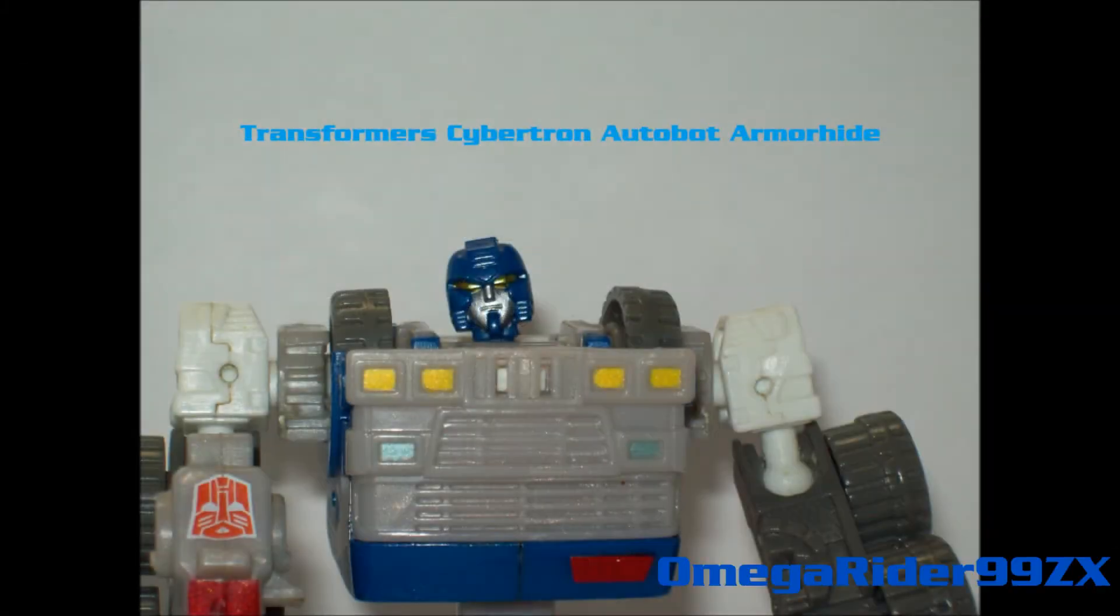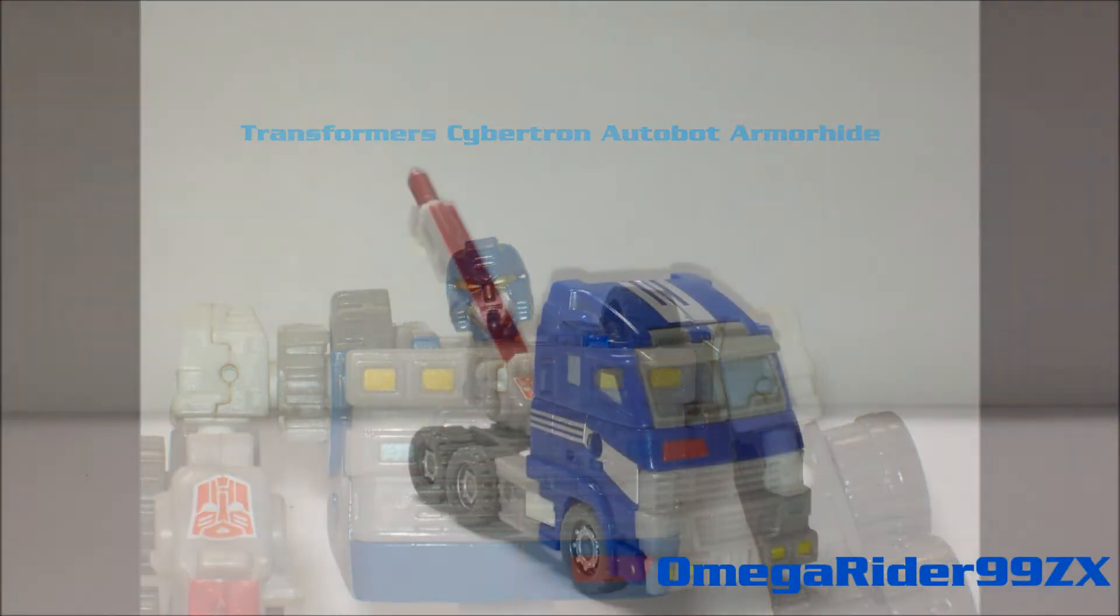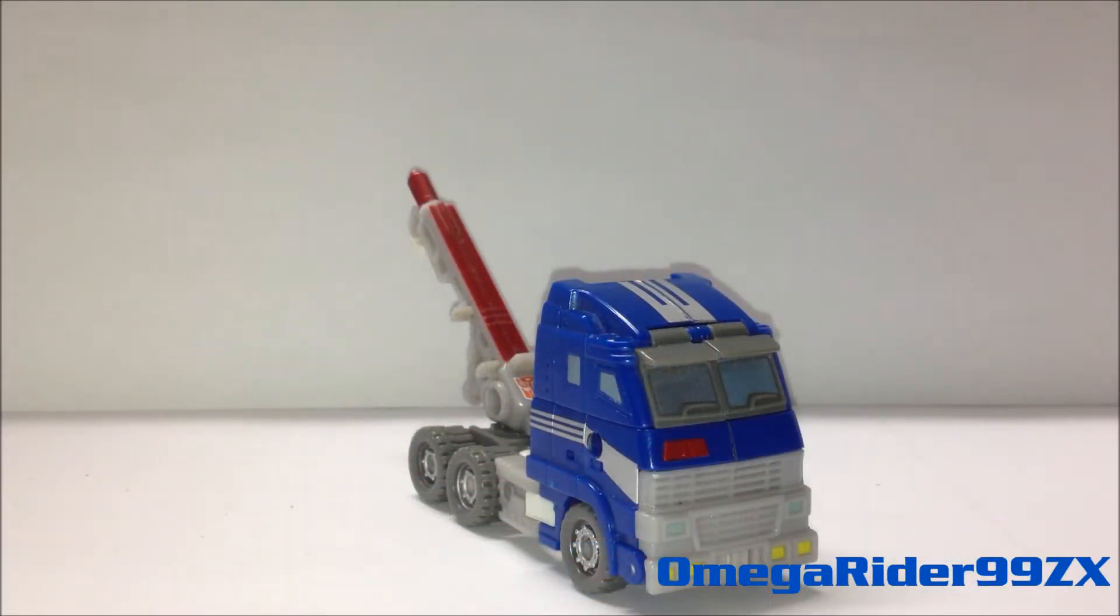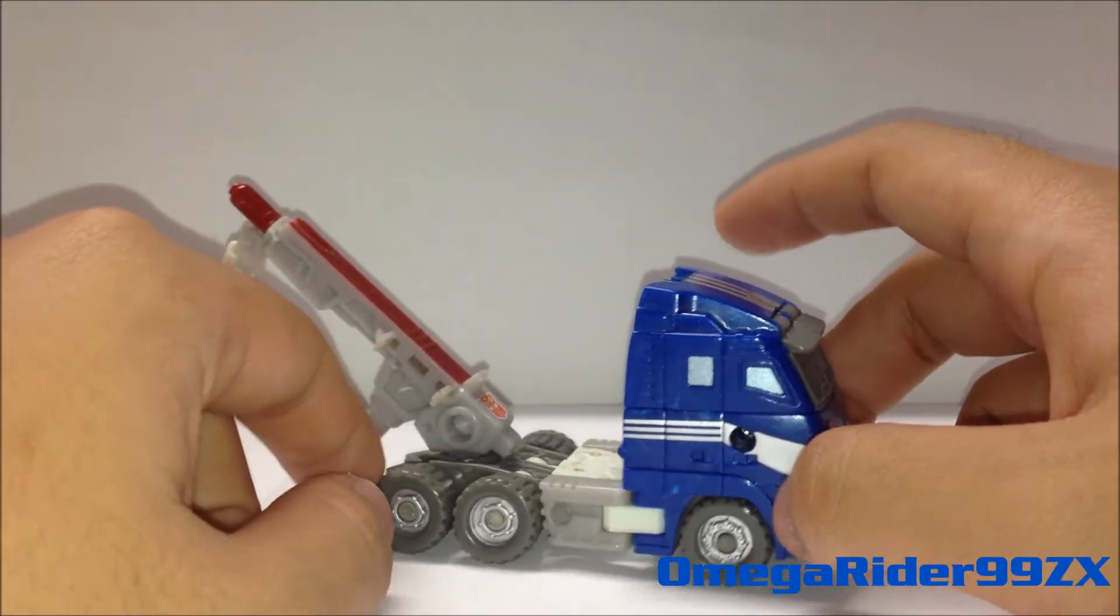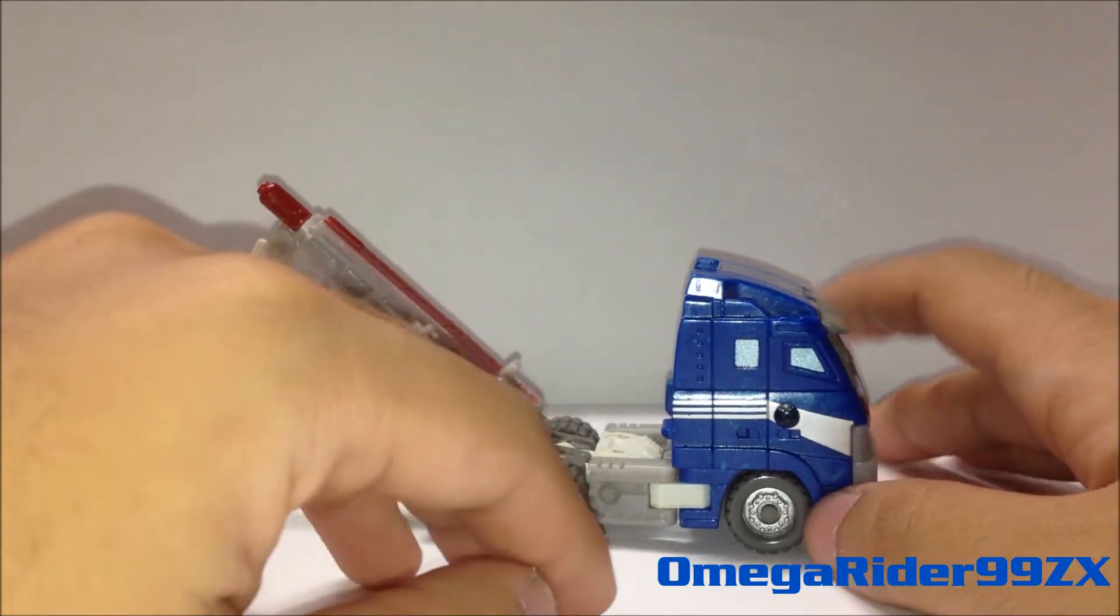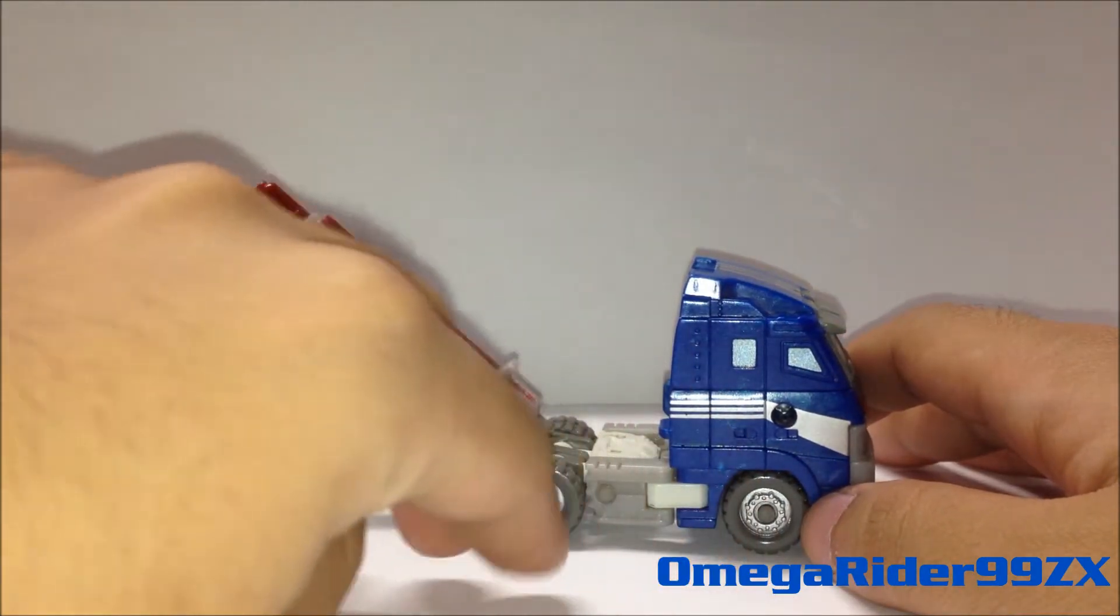Our worlds are in danger. To save them and the galaxy we must buy the Omega Rider 99ZX review. Today's review is Transformers Cybertron Scout class Autobot Armor Hide by Hasbro 2006. I got it from Toys R Us years ago in 2007 along with Jazz, Autobot Jazz.